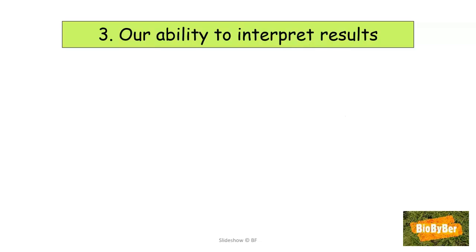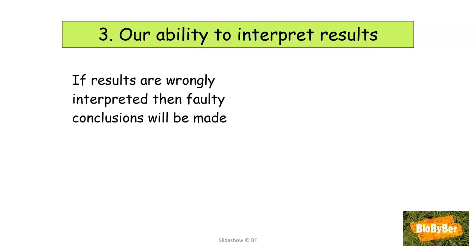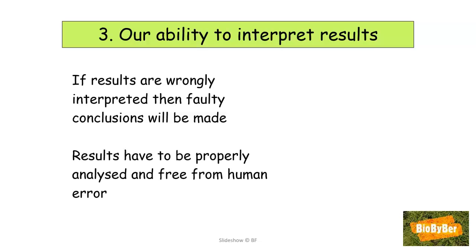Our ability to interpret results can also act as a limitation. If results are wrongly interpreted, then faulty conclusions will be made. Sometimes scientists may interpret results differently, leading to slightly different conclusions, or they may incorrectly interpret the results entirely. For example, drugs tested on animals and deemed safe were later discovered to actually harm humans. It is important that results are analysed and considered properly, as the scientific method is limited if results are not free from human error.